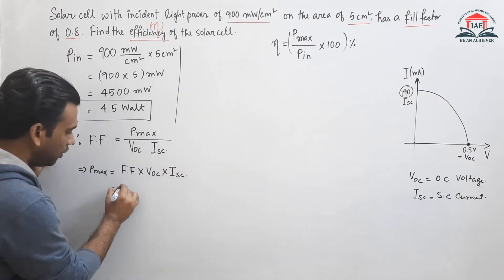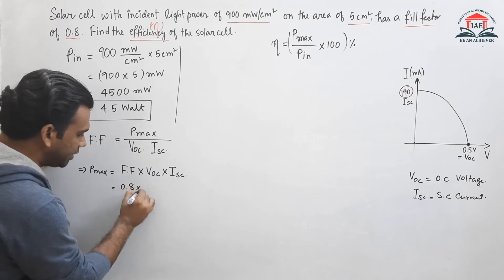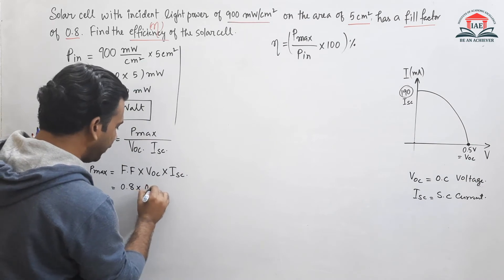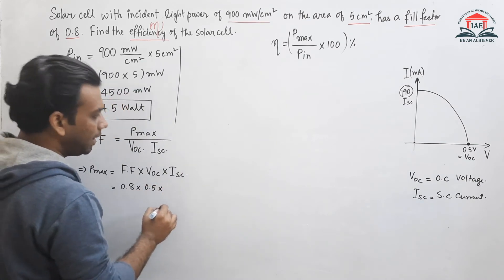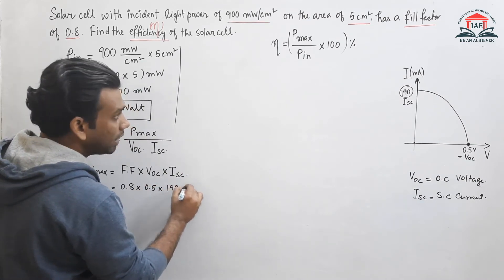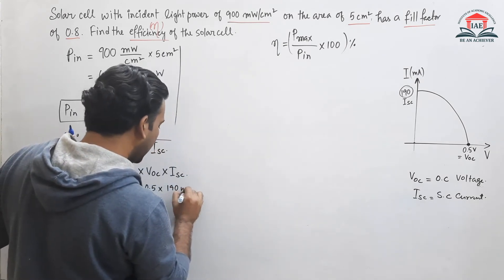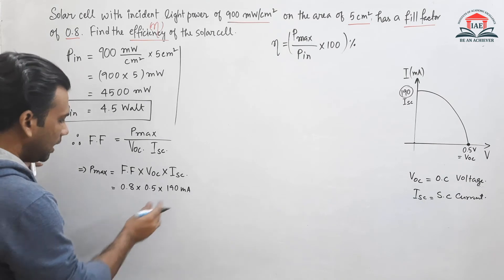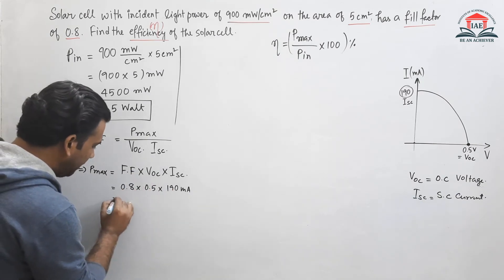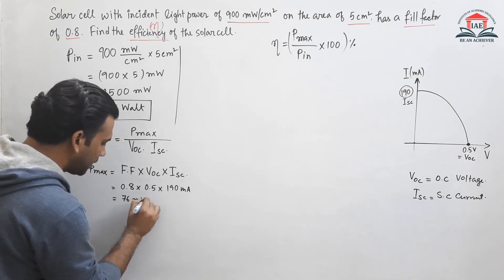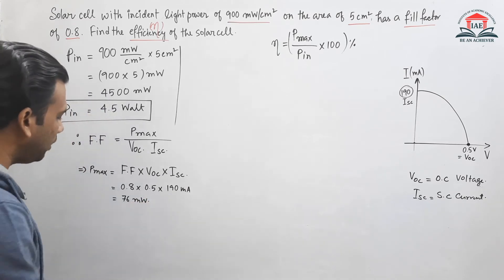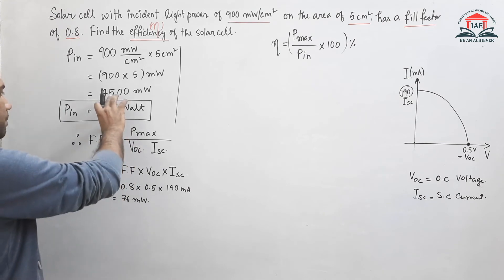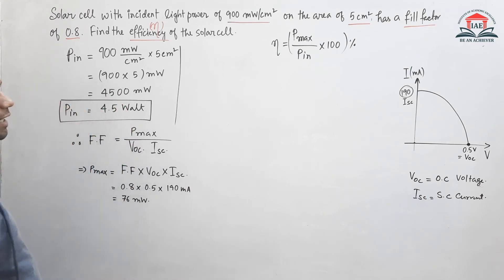Putting in the values: fill factor is 0.8, Voc from the graph is 0.5 volt, and Isc from the graph is 190 milliampere. So P max = 0.8 × 0.5 × 190 milliampere. If you calculate this, the P max value comes out to be 76 milliwatt.